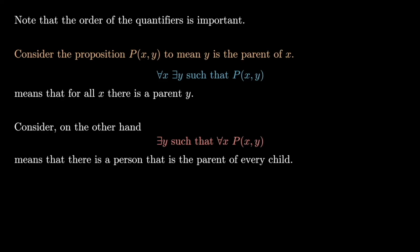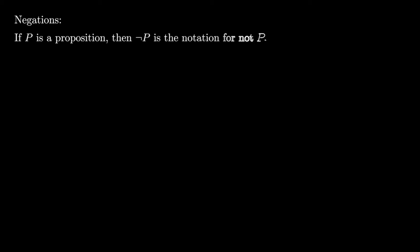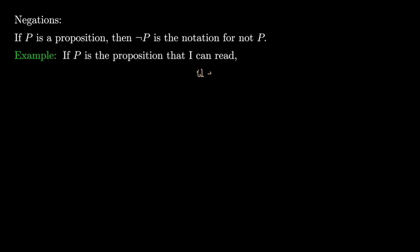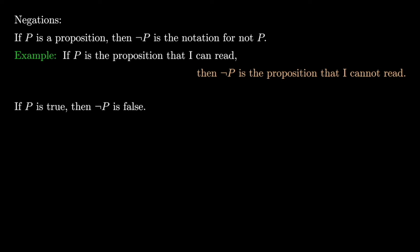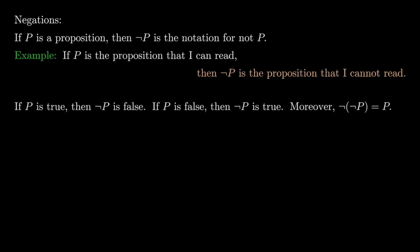Now we want to look at the important topic of negations. If p is a proposition, then not-p (¬p) is the proposition which is true when p is false, and false when p is true. For example, if p is 'I can read,' then ¬p is 'I cannot read.' If p is true then ¬p is false; if p is false then ¬p is true. And ¬(¬p) is just p again.